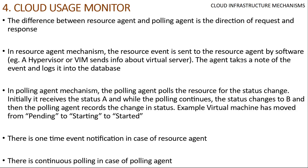In the resource agent mechanism, the hypervisor or VIM sends information about the virtual server status. The machine doesn't directly send its own status — it's the hypervisor that also reports status back to the agents. In the polling agent mechanism, the polling agent polls the resource for status changes. Initially it receives status A; as polling continues, the status changes to B and the polling agent records the change. Example: virtual machine moved from pending to starting to started state. Resource agent uses one-time event notification; polling agent uses continuous polling.